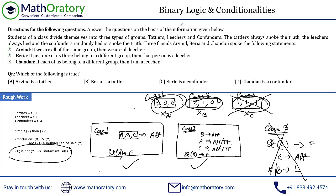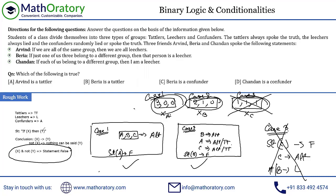Question 1 asks: which of the following is true? 'Arvind is a Tatler' is not definitely true — Arvind can be an alternator in case one or a truth teller in case two, so both are possible. Beria is always a confunder (alternator) in both valid cases. So option C — Beria is a confunder — is the correct answer.